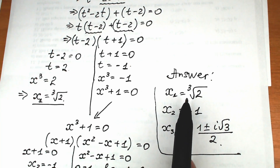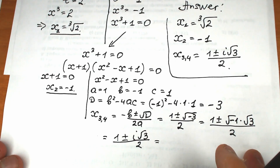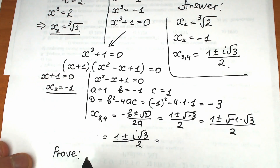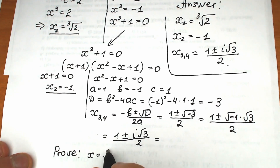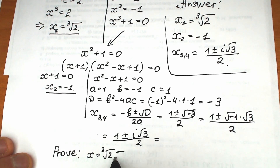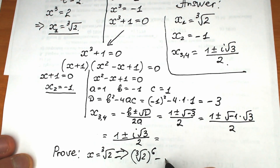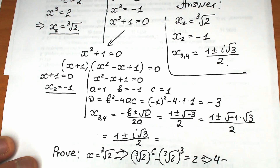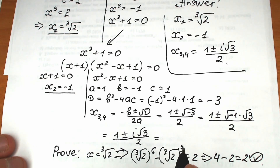Let's verify x equals the cube root of 2. We compute (cube root of 2) to the 6th power minus (cube root of 2) to the 3rd power: that gives 2 squared minus 2, which equals 4 minus 2, which equals 2. Everything checks out — we've completely solved this challenge.